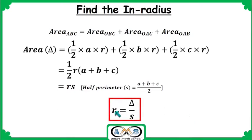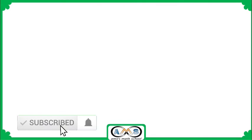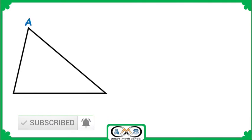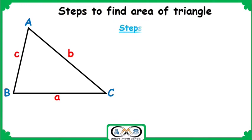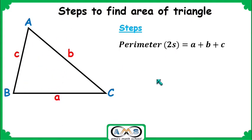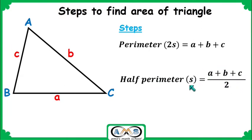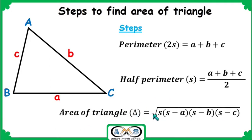With this formula we can find the in-radius for any triangle when its three sides are given. To find the area when three sides a, b, c are given, follow these steps: first find the perimeter a + b + c, then the semi-perimeter s = (a + b + c) / 2. The area of the triangle is then the square root of s(s−a)(s−b)(s−c). By substituting the values of a, b, c, and s we can easily find the area.